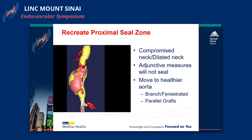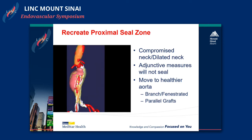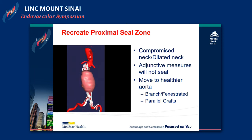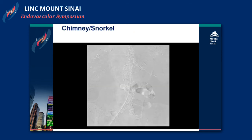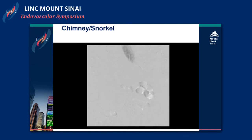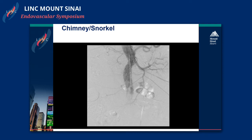In some situations, when we're talking about a compromised neck — usually a dilated neck — it becomes quite unhealthy and you can't reestablish the seal zone with a Palmaz or endo anchoring. Adjunctive measures are not going to work, and what you really need to do is move to healthier aorta. Branch or fenestrated devices, or ultimately parallel grafts, are the way to get yourself into that healthy aorta and recreate a new proximal seal zone. You can see in this patient we did parallel grafting and resolved that type 1a endoleak.